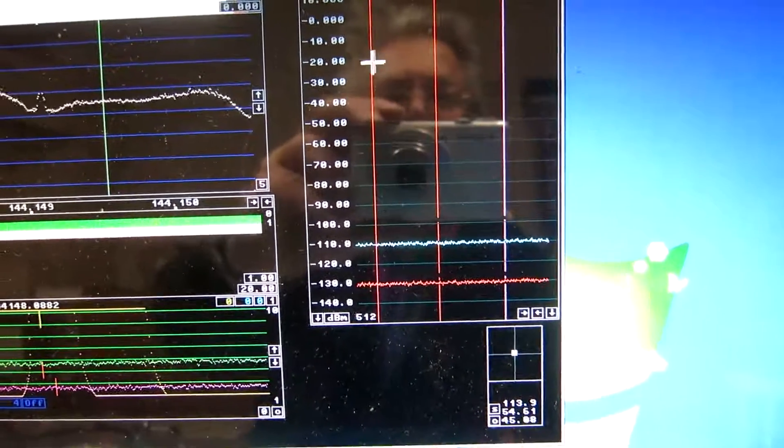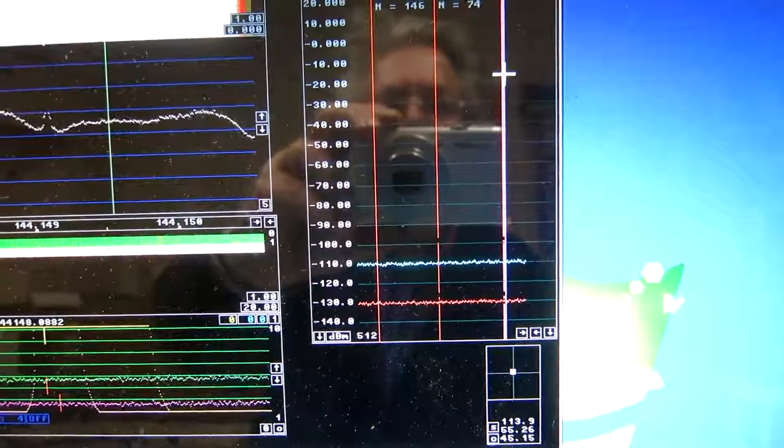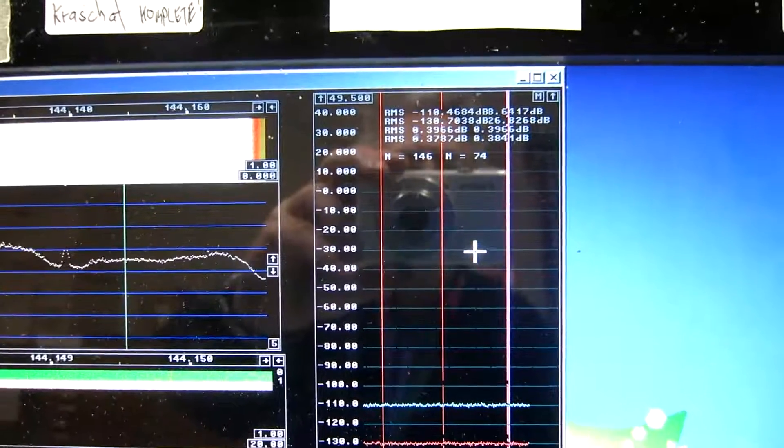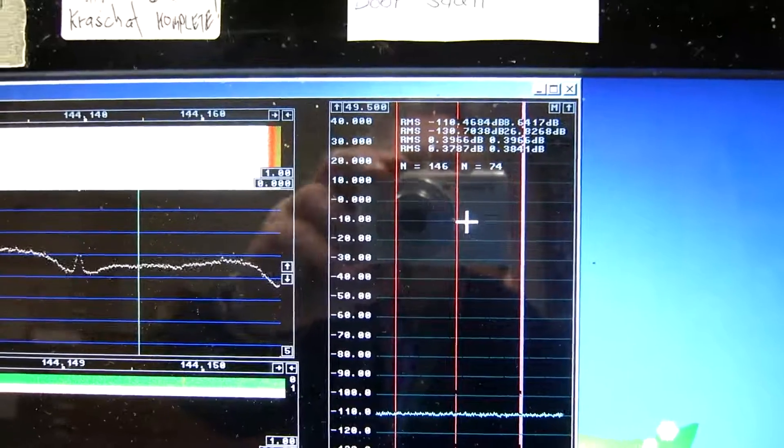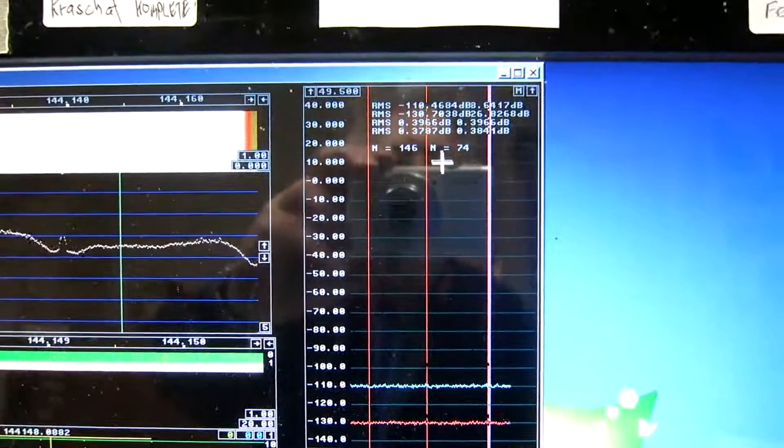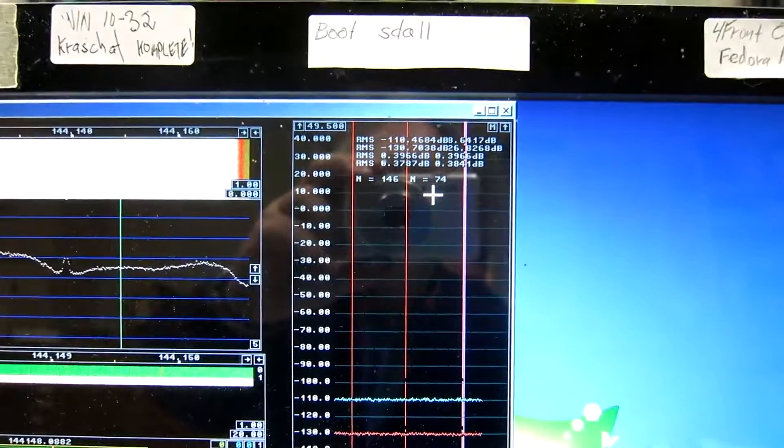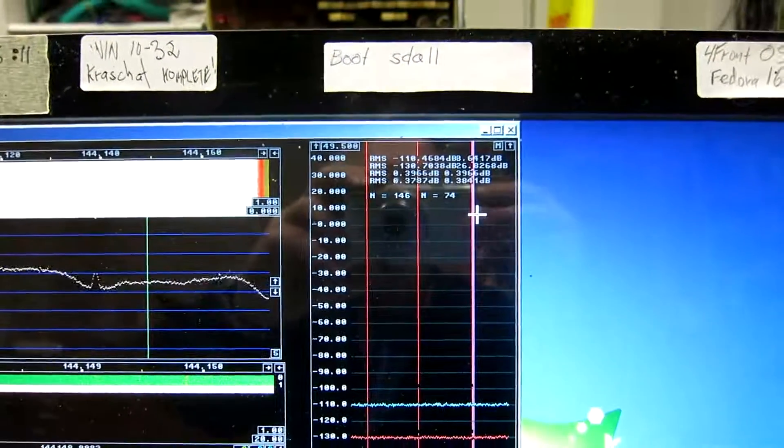So I read out what can this be. Minus 110, that means minus 140 and a half dBc per hertz. That's a significant improvement.